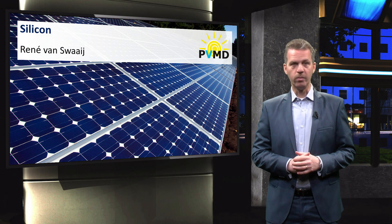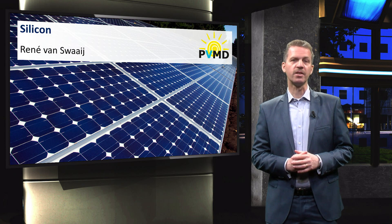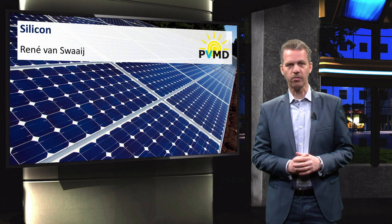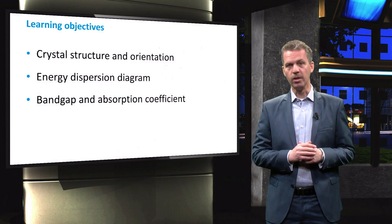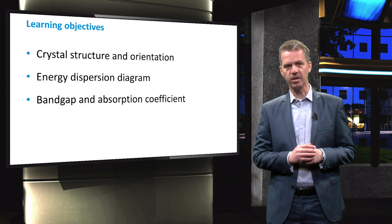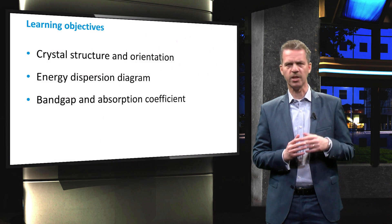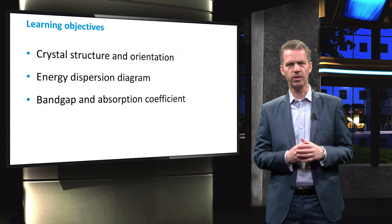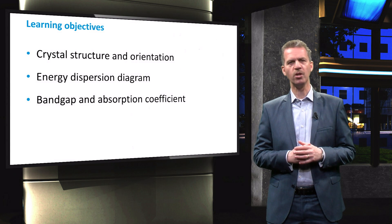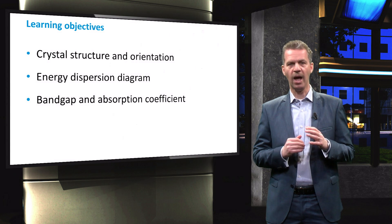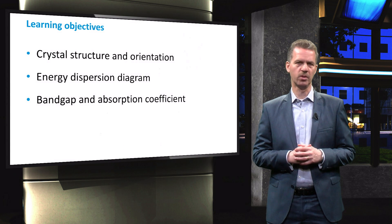In the previous video we briefly discussed the advantages and limitations of crystalline silicon as a solar cell material. In this video we will discuss the basic properties of this material such as the crystal structure and the orientation, the energy dispersion diagram and the absorption coefficient.